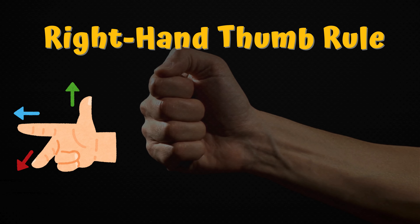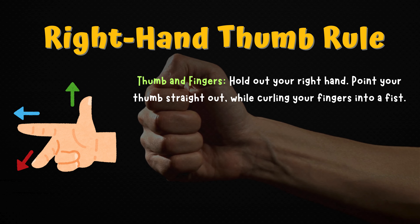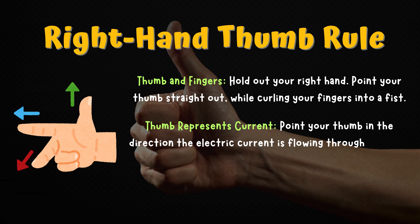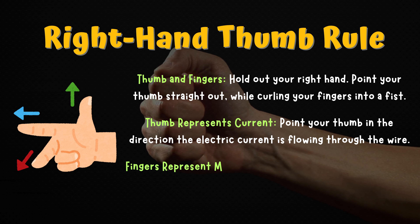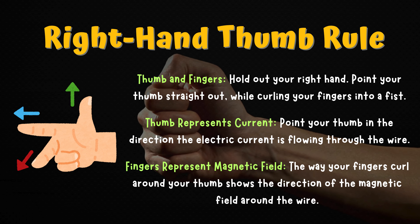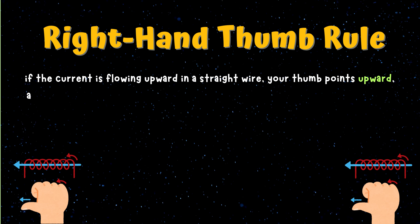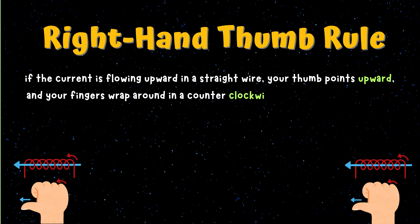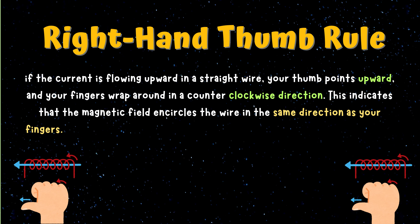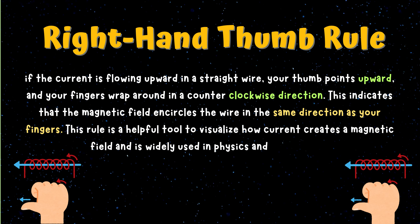Right Hand Thumb Rule. Hold out your right hand. Point your thumb straight out while curling your fingers into a fist. The thumb represents current — point your thumb in the direction the electric current is flowing through the wire. The fingers represent the magnetic field — the way your fingers curl around your thumb shows the direction of the magnetic field around the wire. If the current is flowing upward in a straight wire, your thumb points upward and your fingers wrap around in a counterclockwise direction, indicating that the magnetic field encircles the wire in the same direction as your fingers. This rule is a helpful tool to visualize how current creates a magnetic field and is widely used in physics and engineering.